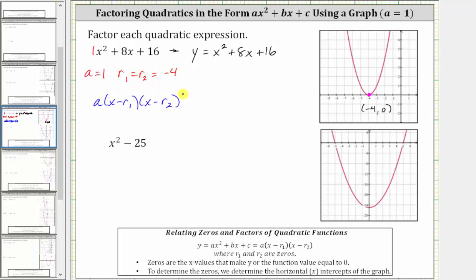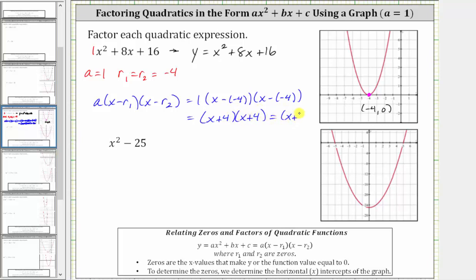Which means the given expression can be written as one times the quantity x minus negative four, times the quantity x minus negative four. Simplifying, we can leave off the one, and x minus negative four simplifies to x plus four. We have two factors of x plus four, which we can write as the quantity x plus four squared. So the given trinomial is a perfect square trinomial because we have two equal binomial factors.